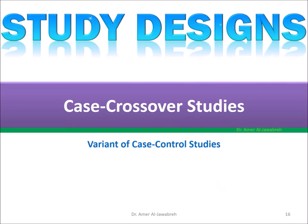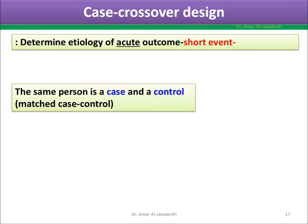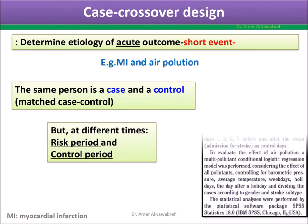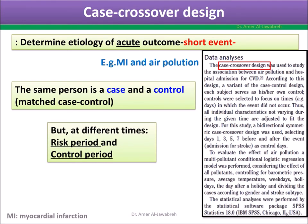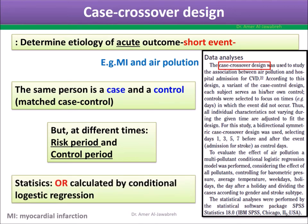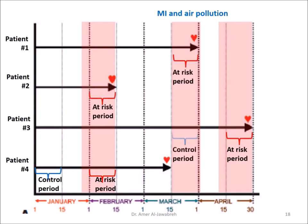Case crossover studies. A design to determine the etiology of an acute outcome — short events. The same person serves as both case and control, but at different times: the risk period and the control period. This is essentially a matched case control design. Example: MI and air pollution. Statistics: odds ratio calculated by conditional logistic regression. The comparison is made between the risk period and control period for each patient.